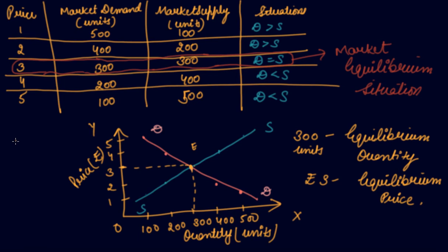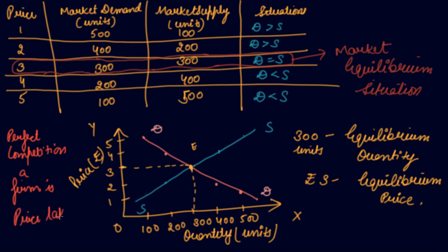In perfect competition, your firm is a price-taker, as the price is decided by the forces of demand and supply. The demand and supply together determine the price. So in perfect competition, a firm is a price-taker, not a price-maker.